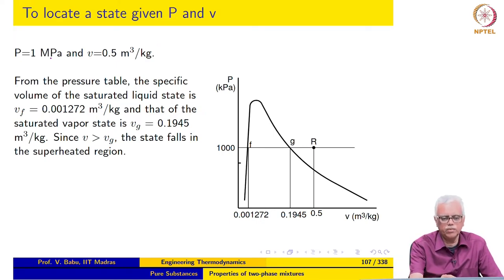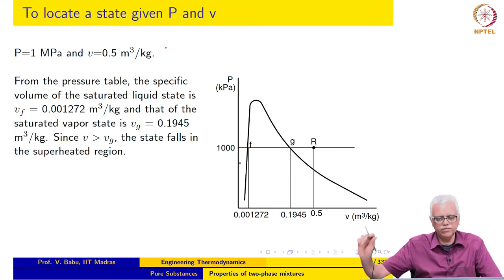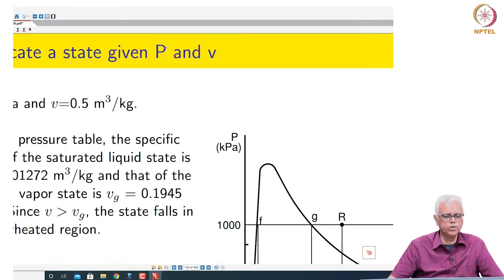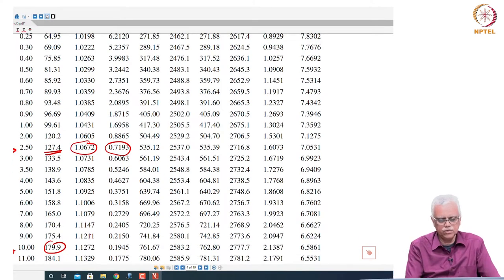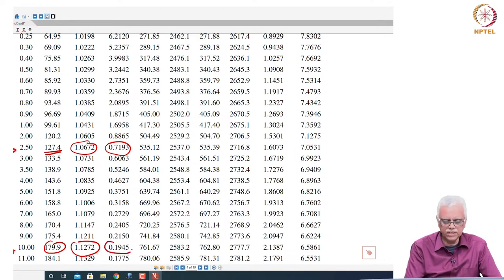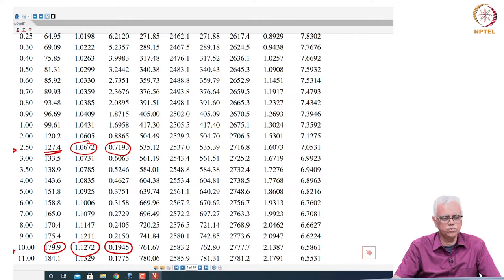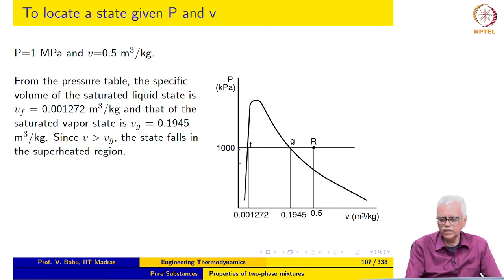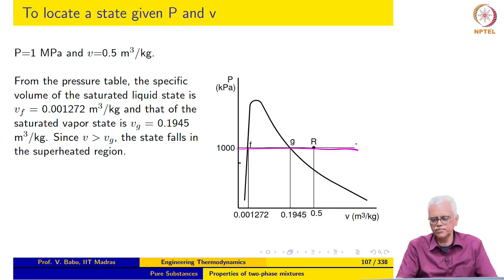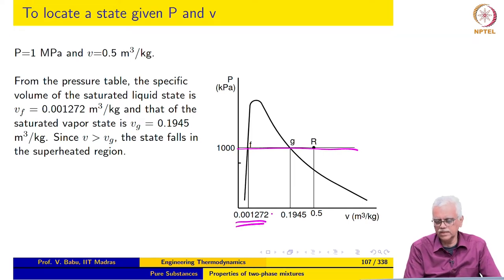Let us go through one more example: 1 MPa and specific volume 0.5 m³/kg. We go to the pressure table because pressure is given. At 1 MPa, which is 10 bar, the specific volume of the saturated liquid is 0.0011272 and that of the saturated vapor is 0.1945. We retrieve these values and then go through the same procedure again. We draw the isobar corresponding to 1 MPa and retrieve Vf and Vg from the tables.